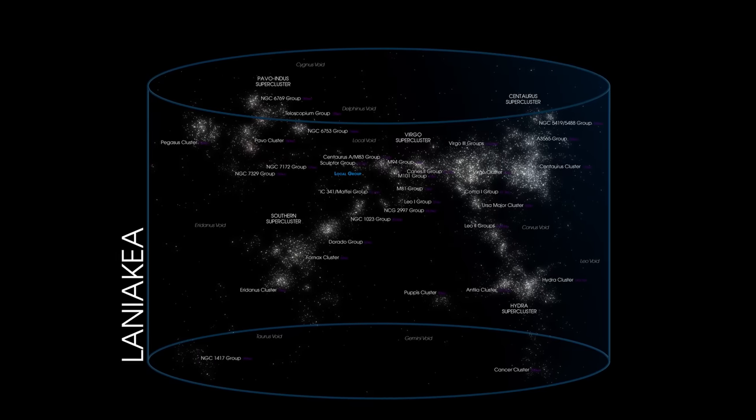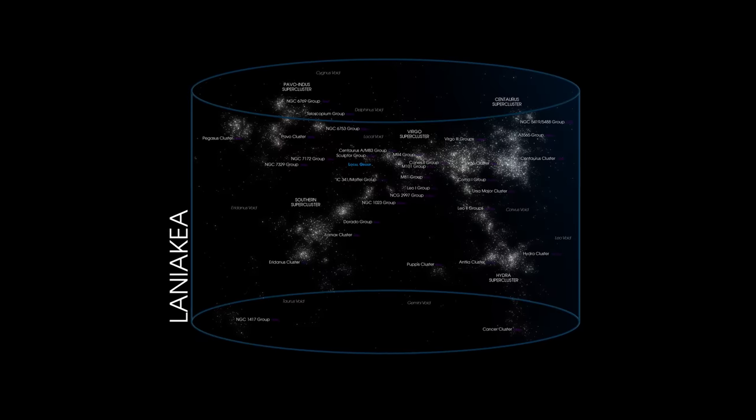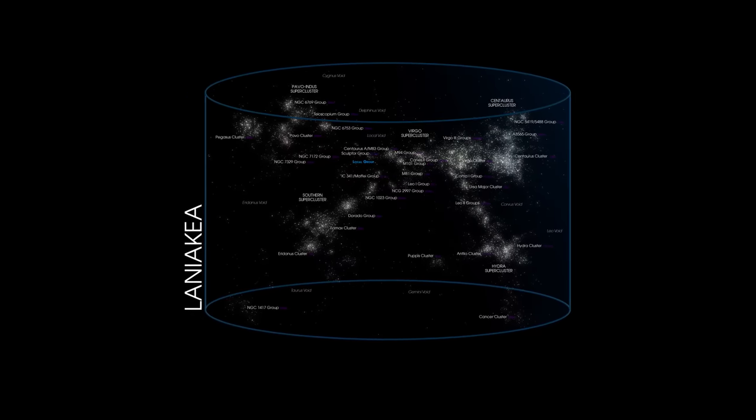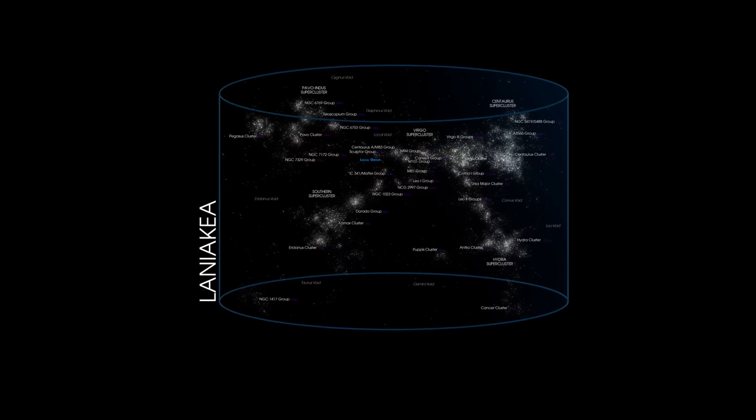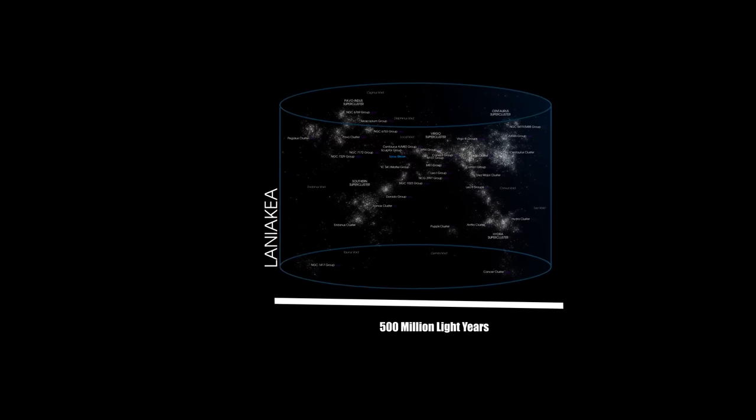As we journey outward from the Virgo Supercluster, we arrive at an even more staggering cosmic structure, the Laniakea Supercluster. This immense congregation of galaxies, which includes the Virgo Supercluster and extends over 500 million light-years, is our galactic home on a grand scale. Laniakea, meaning immense heaven in Hawaiian, truly lives up to its name.